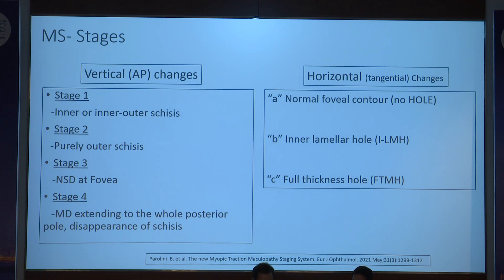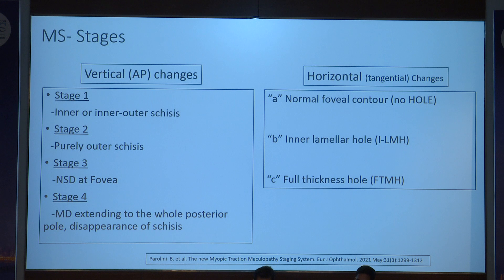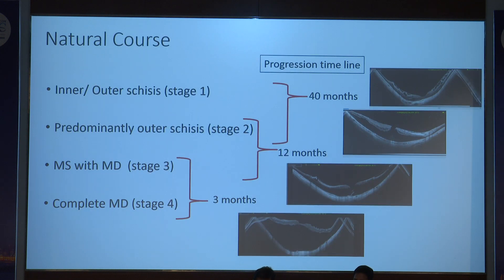Stage 1 has inner or inner-outer schisis; stage 2 is purely outer schisis; stage 3 is neurosensory detachment at the fovea; stage 4 is detachment extending to the whole posterior pole where schisis disappears, probably because anteroposterior traction has disappeared. Horizontally, there is normal fovea contour; because of tangential stretching, you can either have an inner lamellar hole (type B) or a full-thickness macular hole (type C). Looking at the natural course, progression from stage 1 to stage 2 takes approximately 40 months on average.